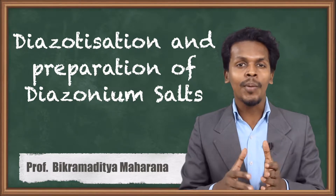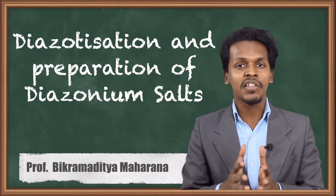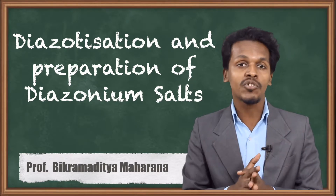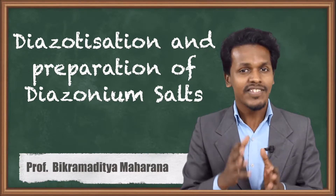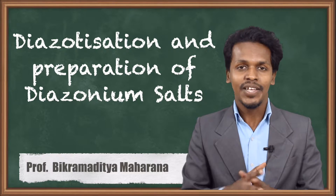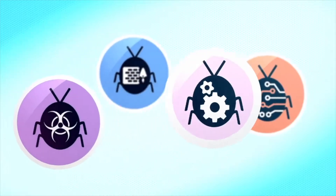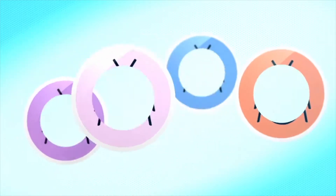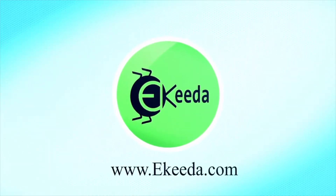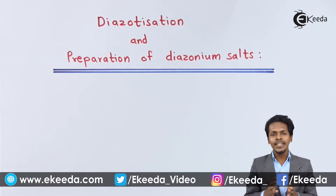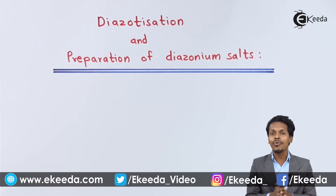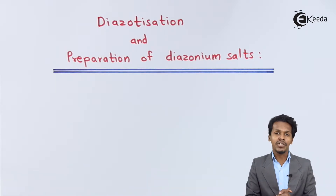And now we are going to talk about the final nitro compound and that is nothing but diazonium salt. So, what is diazonium salt and what is this process known as diazotization? In this topic we are going to discuss about the preparation of diazonium salts as well as what is diazotization.